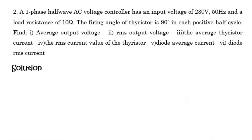Next question: a single-phase half-wave AC voltage controller has an input voltage of 230 volts, 50 hertz, and a load resistance of 10 ohms. The firing angle of the thyristor is 90 degrees in each positive half cycle. Find the average output voltage, RMS output voltage, average thyristor current, RMS current of the thyristor, diode average current, and diode RMS current.